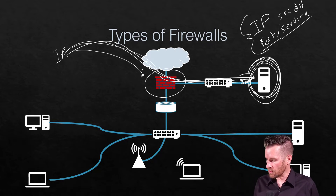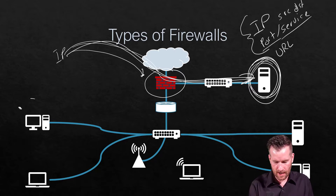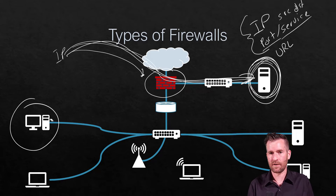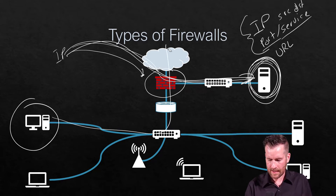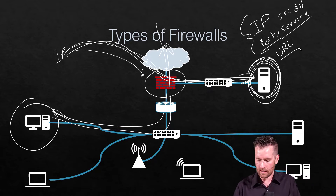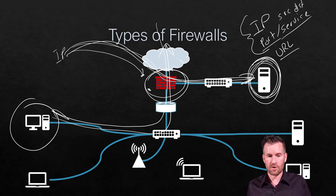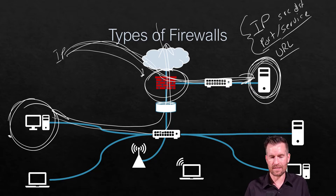We can also do URL filtering. Perhaps we don't want internal traffic reaching certain web pages, so we filter by the URL. For example, in schools I've set up firewalls with URL filtering so that students cannot get to sites they shouldn't be accessing.